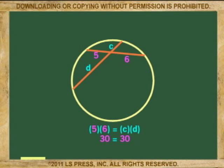So that if C is 3, then D must be 10. And if C is 4, then D must be 7.5.